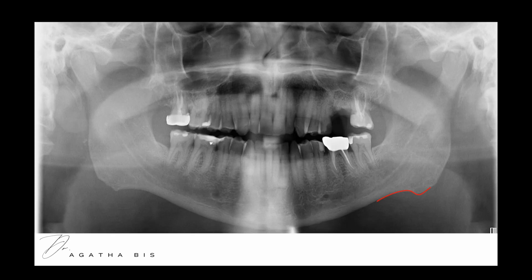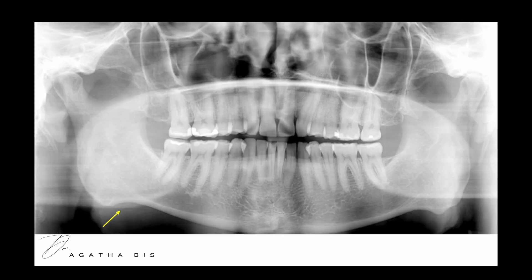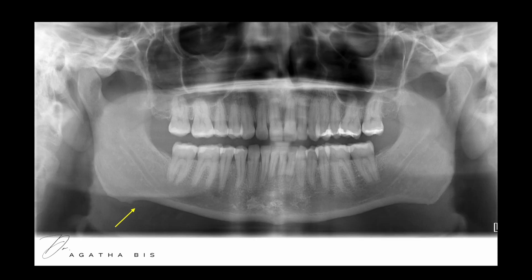Here's an example of a Panorex where you can see notching, and here's the other side of it. Here's another patient — more notching. And here it is again in a different patient.